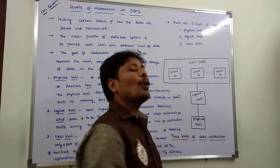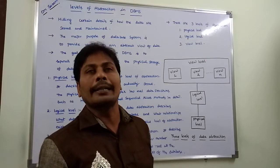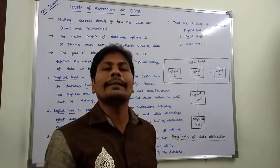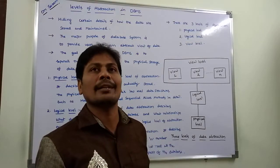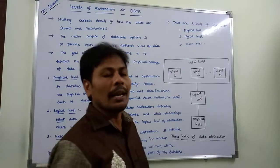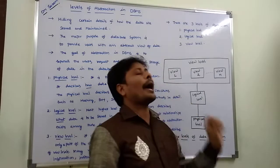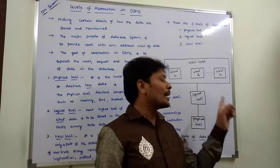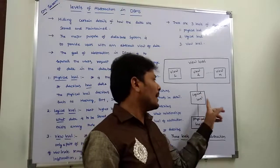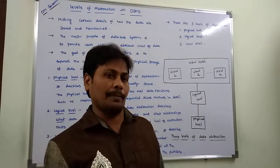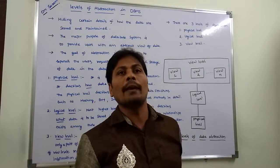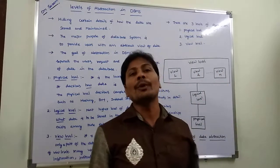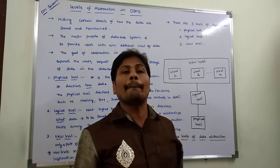To recap: at the physical level, how the data is actually stored is described — it is the lowest level of abstraction, covering complex low-level structures such as B++ trees, hashing, and indexed sequential access methods. The logical level describes what data is stored and what relationships exist among that data, and the DBA uses this level. The highest level is the view level, which can be divided into n levels — view 1, view 2, up to view n — and describes only a part of the database.